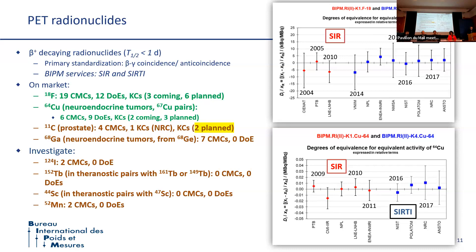For all the others under investigation for PET — Iodine-124, Terbium-152, Scandium-44, Manganese-52, and maybe others — there are very few or no CMCs and of course no comparison results.